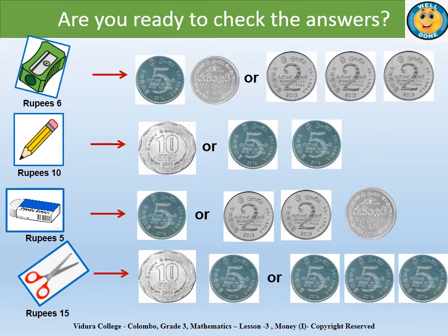Are you ready to check the answers? Shall we start then? The first item is a sharpener which is six rupees. You can represent it either using a five rupee coin and a one rupee coin, or using three two rupee coins. The second item is a pencil which is ten rupees. You can represent it either using a ten rupee coin or using two five rupee coins. The third item is an eraser which is five rupees. You can either represent it using a five rupee coin or using two two rupee coins and a one rupee coin.